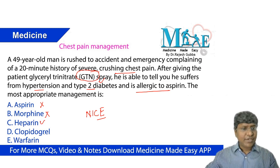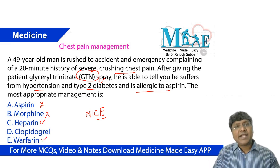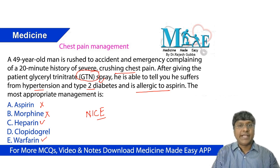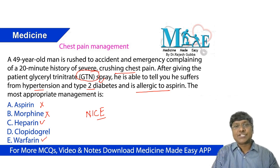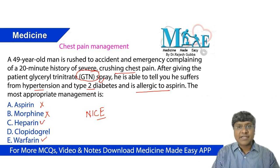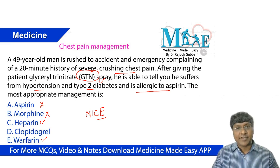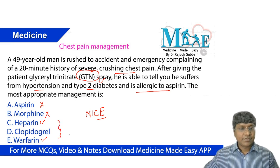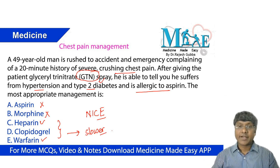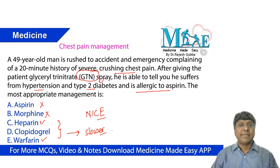Then you take heparin and warfarin. Heparin and warfarin provide anticoagulant action in patients with coronary artery disease. But these particular drugs — heparin and warfarin — will have a slower onset of action, so they don't need to be given in acute management in this scenario.